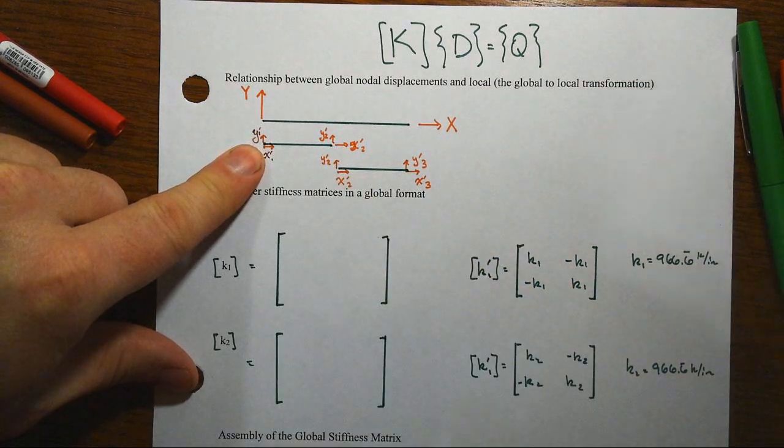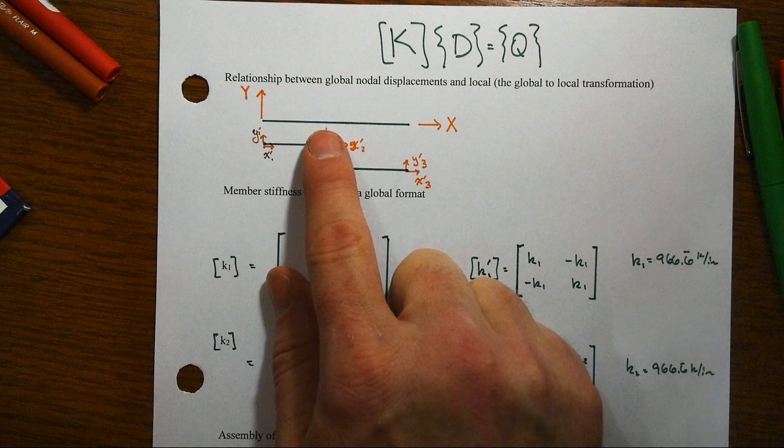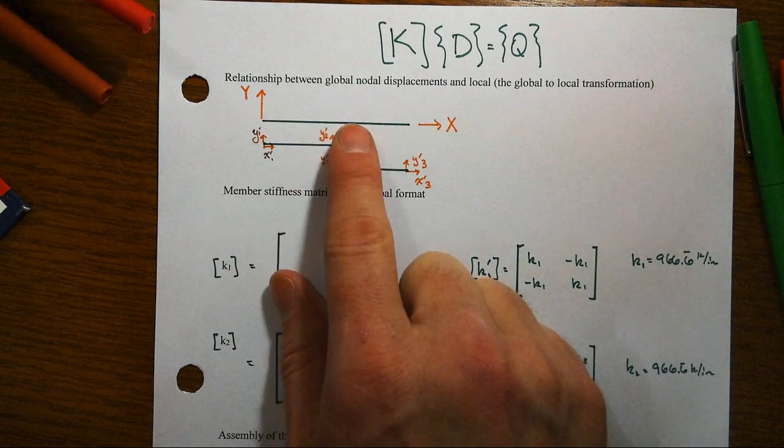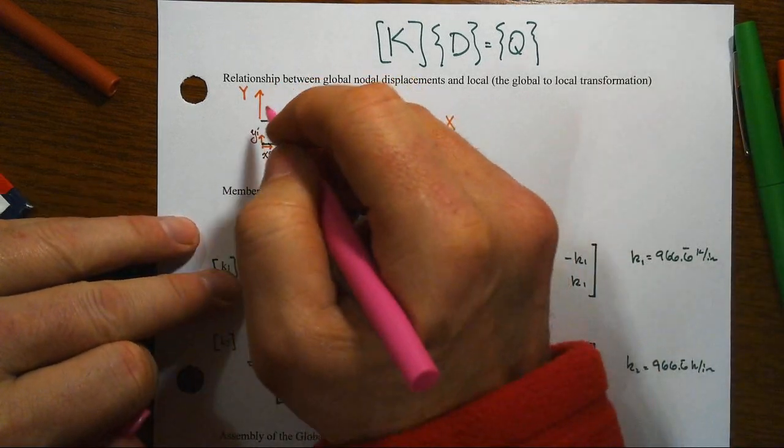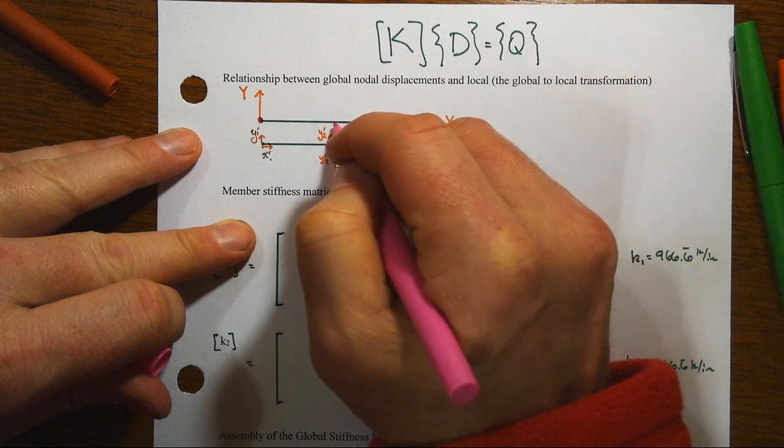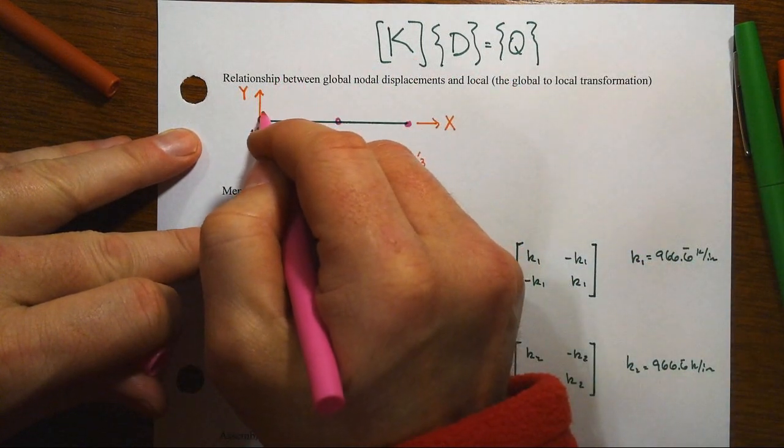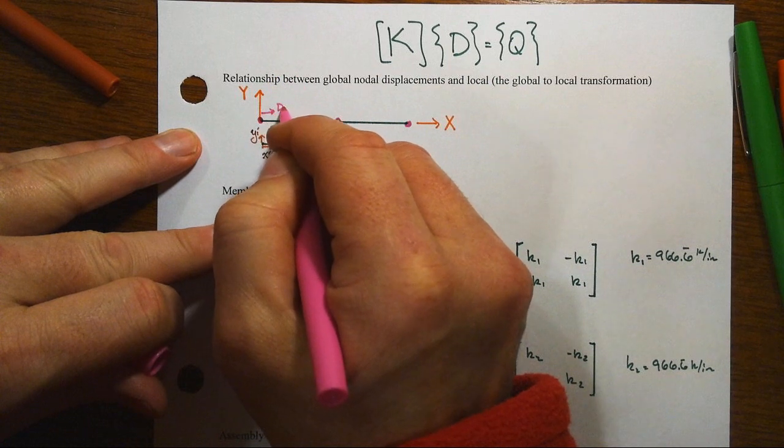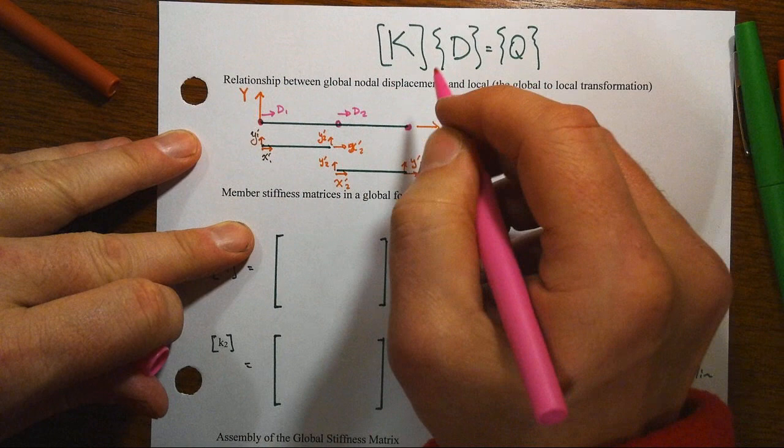And so what we're going to do though is remember we've got a structure that has two members lined up with each other and our degrees of freedom are such that we have a joint at each end and a joint in the middle. And so the displacements that we're monitoring globally are these displacements D1, D2, D3, that if we know those we know everything else that's going on in the structure.